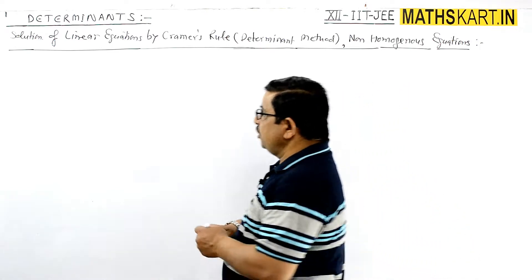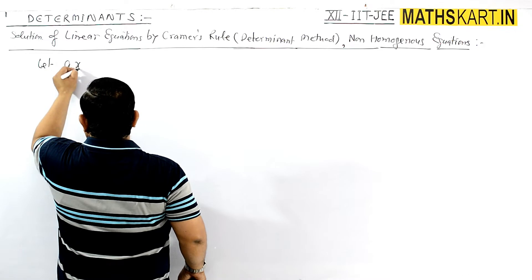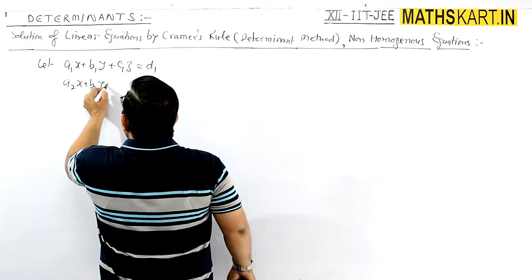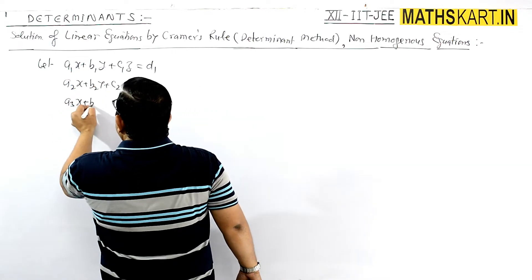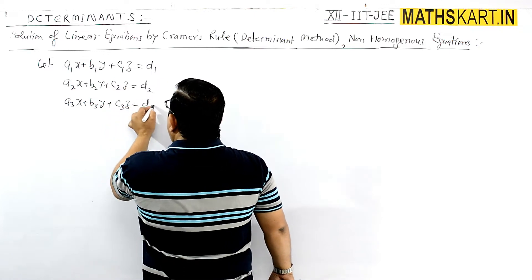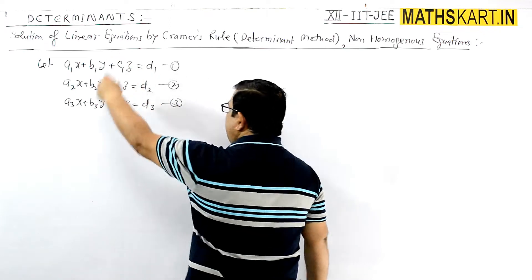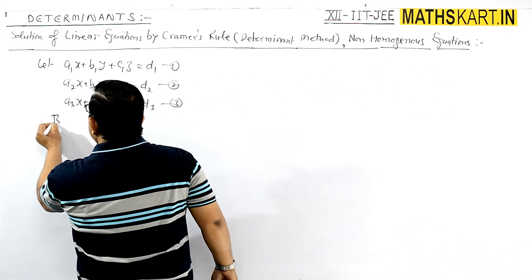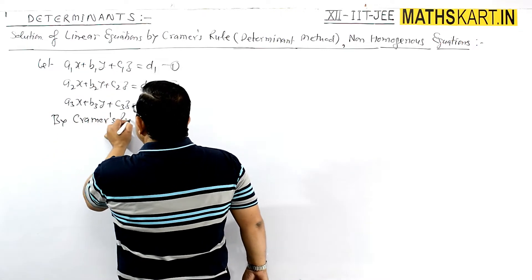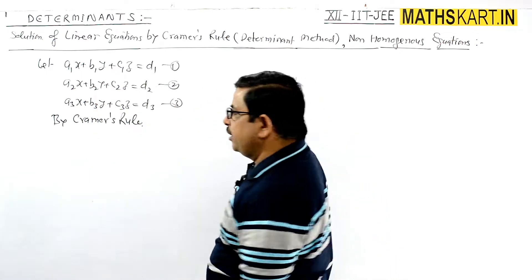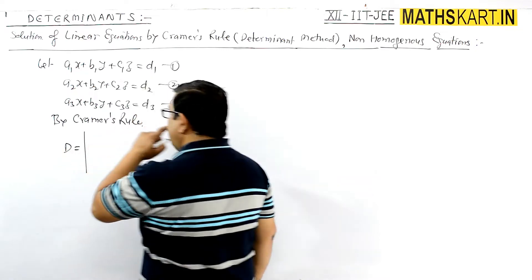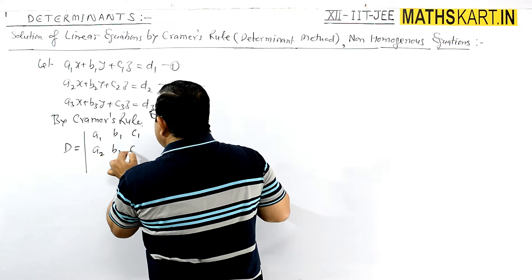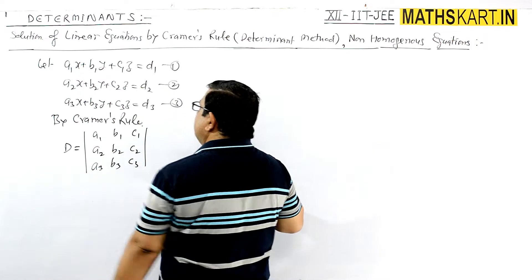Let three equations be: a1x + b1y + c1z = d1, a2x + b2y + c2z = d2, and a3x + b3y + c3z = d3. There are three linear equations with three variables x, y, z. By Cramer's rule, they can be written in determinant form. The first determinant D is the determinant of the coefficients of the three variables: a1 b1 c1 / a2 b2 c2 / a3 b3 c3.